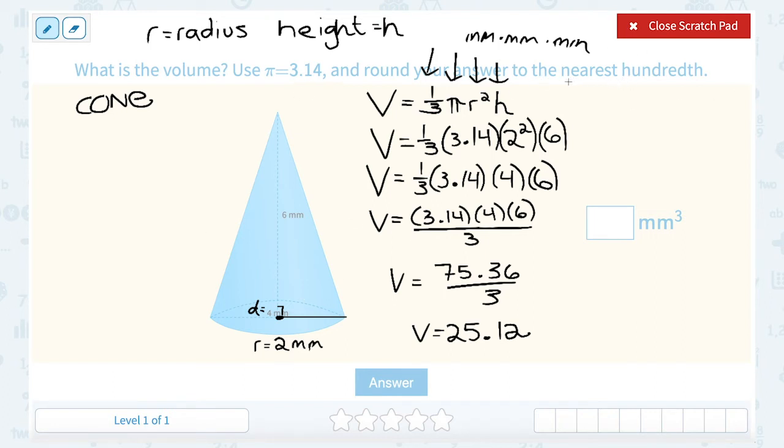Now, it did tell us to round our answer to the nearest hundredth. Remember, the hundredth would be two decimal places. The first one would be the tens place. The second would be the hundredth. Since my answer only went out to two places, I'm going to leave it as 25.12 millimeters cubed.